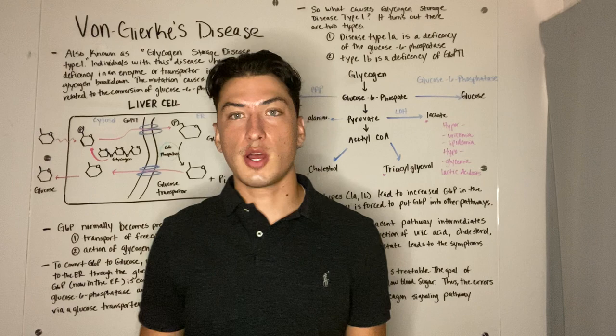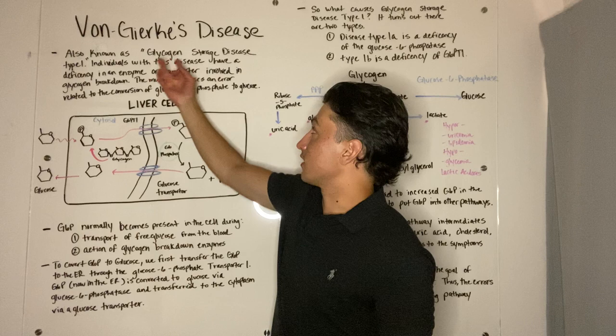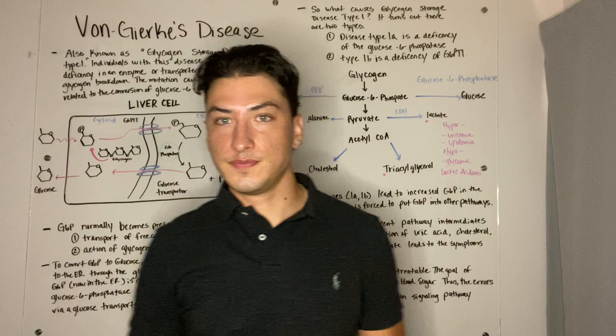Hi everyone, my name is Bryce Roberts and this is my final video project. Von Gierke's disease, also known as glycogen storage disease type 1, is a condition where the body is unable to break down glycogen.